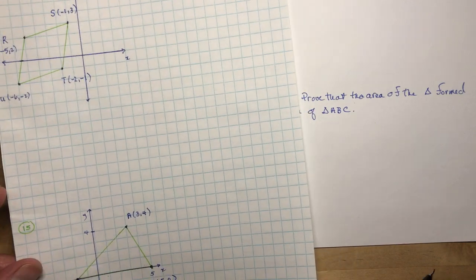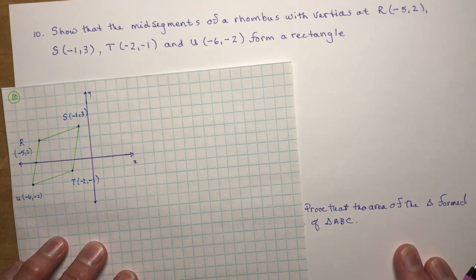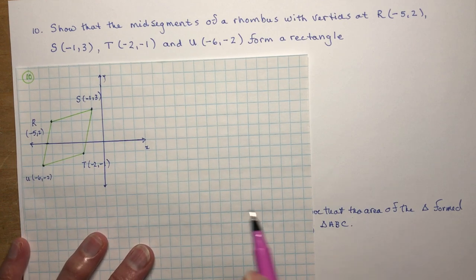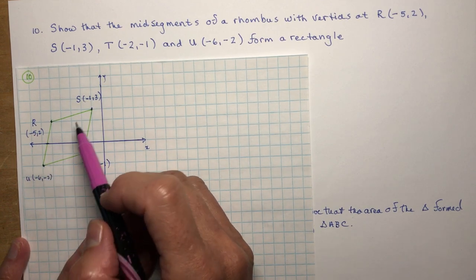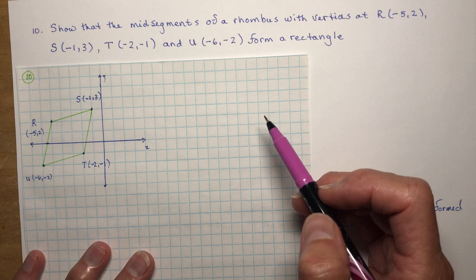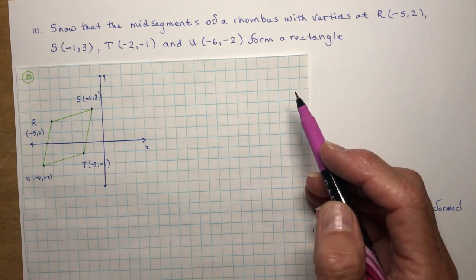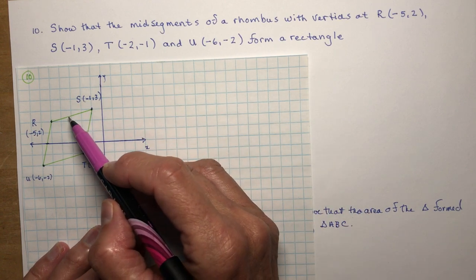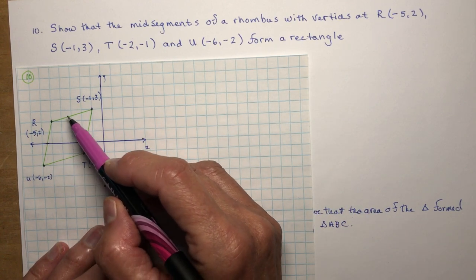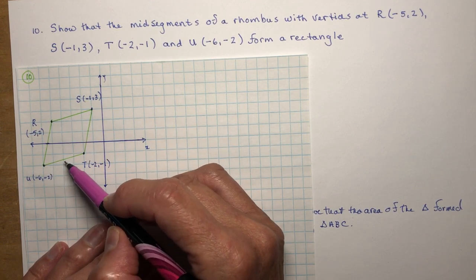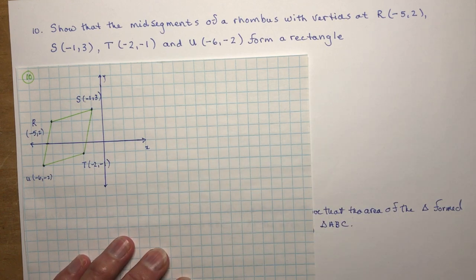Number 10 says: show that the mid-segments of a rhombus with vertices at R(−5, 2), S(−1, 3), T(−2, −1), and U(−6, −2) form a rectangle. The mid-segments are the lines drawn between the midpoints of the sides, so I need to find the midpoint of all four sides.